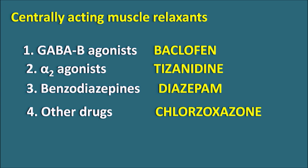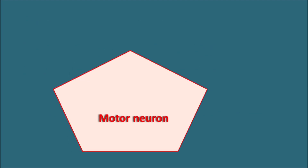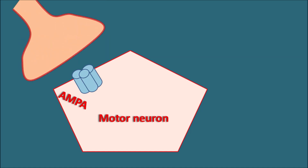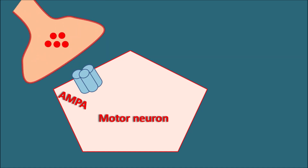All these drugs are centrally acting, so they produce central depression resulting in drowsiness and dizziness in patients. Within the central nervous system, the motor neuron controls skeletal muscle activity. This motor neuron is equipped with AMPA receptors — receptors for glutamate, which are ionotropic receptors that are fast acting. Whenever glutamate acts on AMPA receptors, motor neurons are rapidly activated to send signals to the skeletal muscle.